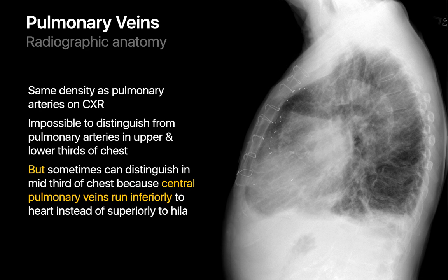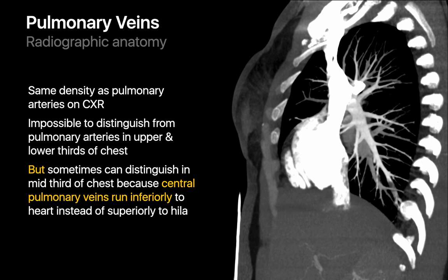While it is impossible to differentiate peripheral pulmonary veins from pulmonary arteries in the upper and lower thirds of the chest on a lateral image, you can sometimes distinguish them in the posterior mid-chest because of the different directions they travel. Peripheral pulmonary veins in the posterior mid-chest converge upon the left atrium, while peripheral pulmonary arteries converge upon the hila, situated much more superiorly, allowing you to sometimes tell them apart by observing where they converge.